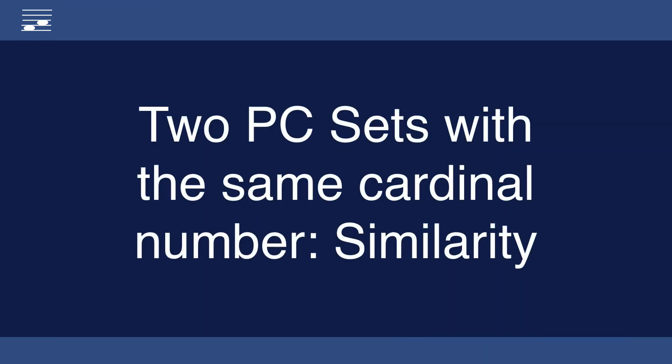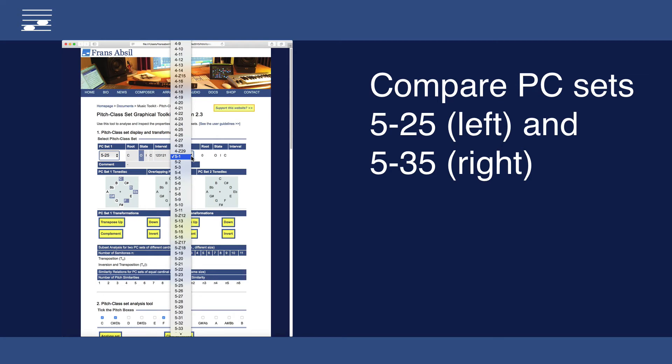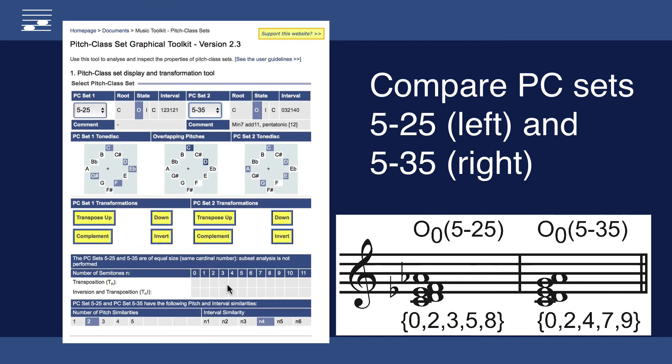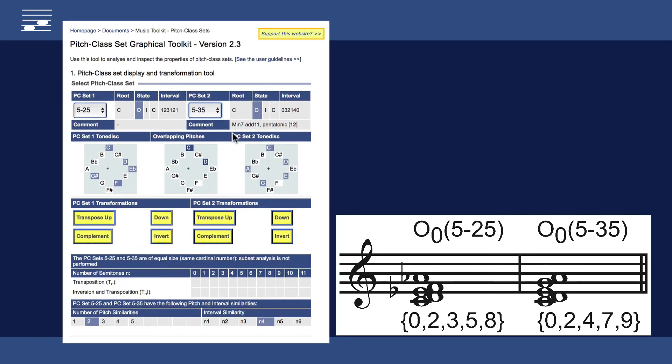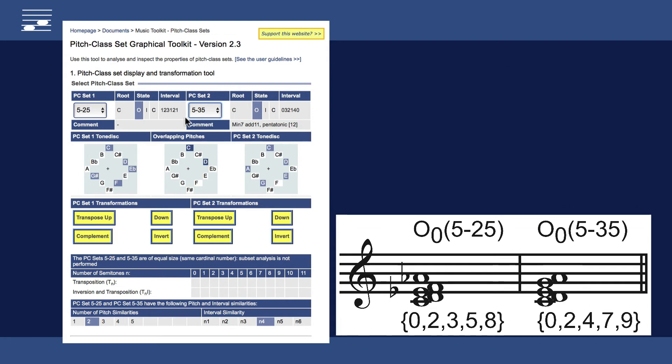For two sets with identical cardinal number the inspector shows similarity. With cardinal number 5 we load set 2-5 in the left and set 3-5 in the right inspector. Set 5-35 has a tonal equivalent meaning. Here a minor 7 chord with added 11th or a pentatonic scale.